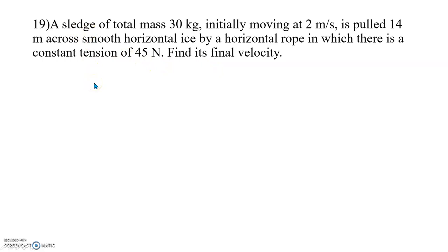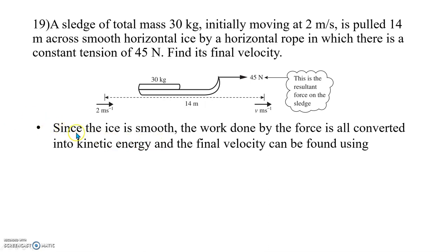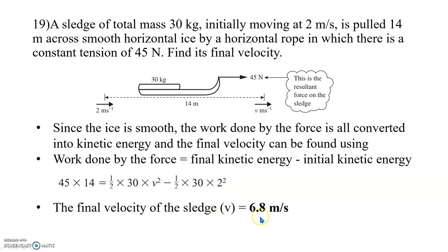Drawing the diagram: we have a sledge of mass 30 kg with initial velocity 2 m/s, pulled 40 meters, with 45 Newton as the resultant force. Since the ice is smooth, the work done by the force is all converted into kinetic energy. Applying the work-energy principle: work done = final kinetic energy minus initial kinetic energy. So 45 × 40 = ½ × 30 × V² − ½ × 30 × 2². Solving, the final velocity V = 6.8 m/s.